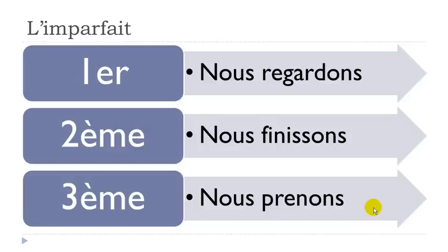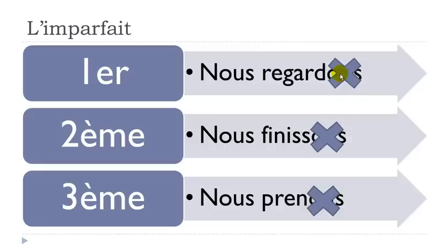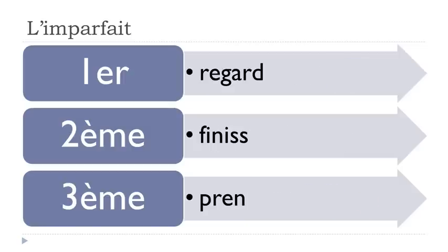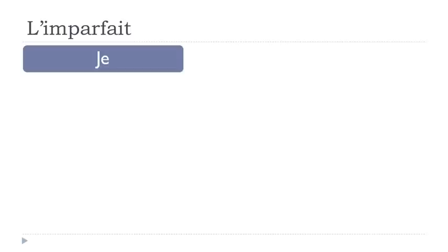To form the imparfait stem, take away the '-ons' ending from the nous present form. From 'nous regardons' you get 'regard-'; from 'nous finissons' you get 'finiss-'; from 'nous prenons' you get 'pren-'. After extracting the stem, you add the imparfait endings.